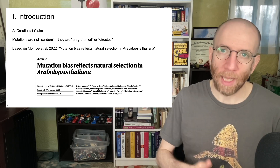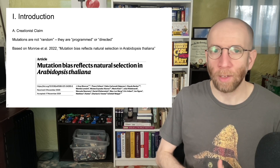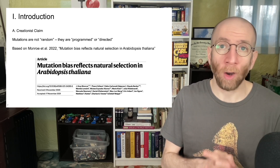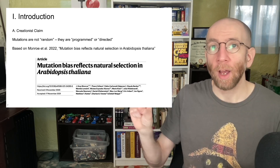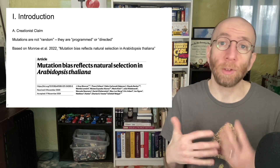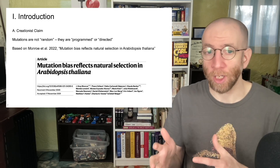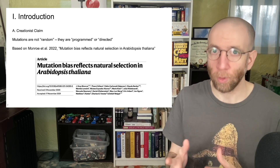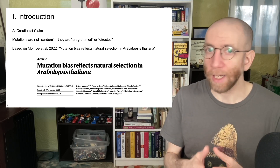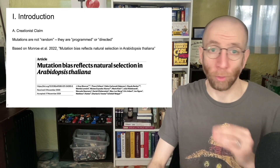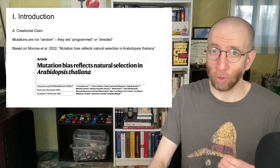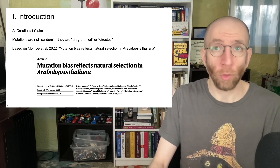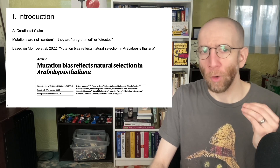Arabidopsis is a plant genetic model organism. What this paper found was that there are region-specific variations in mutation rate across the genome of Arabidopsis — that some regions of that genome mutate at a faster rate than other regions. Creationists took this and ran with it, and I'm recording this in 2024, and they are still running with it.